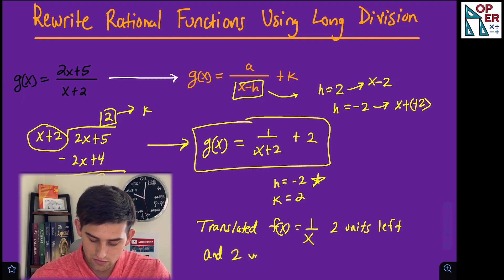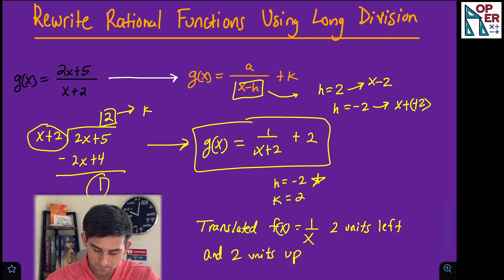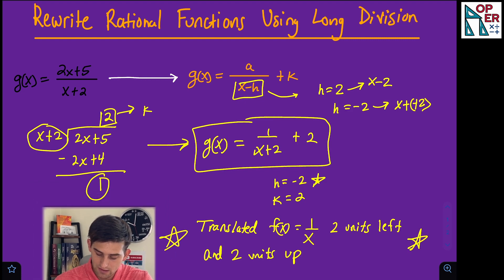And two units up. That's what it reveals. The two units up is because k is positive 2. And that's how you can rewrite a rational function using long division.